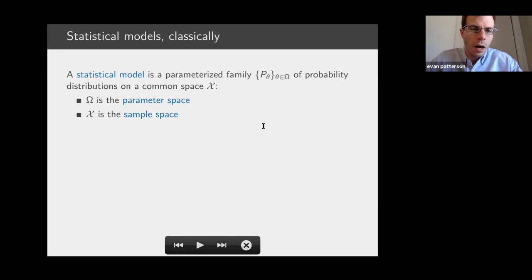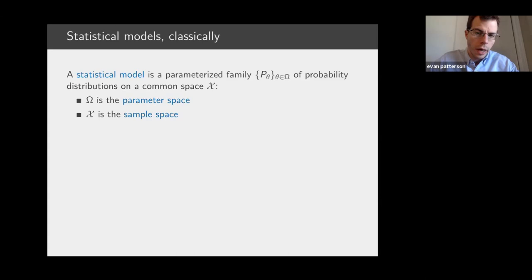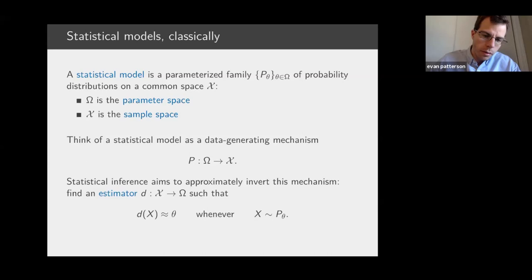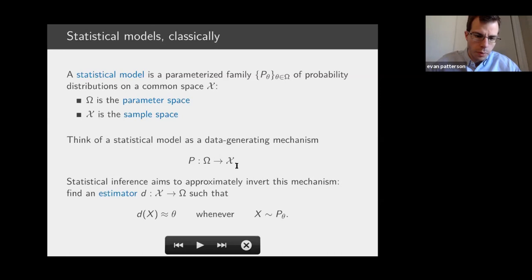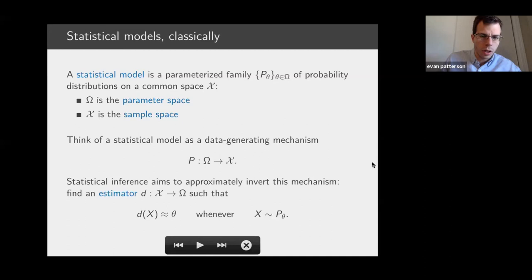In a classical sense, a statistical model is usually defined to be a parameterized family of probability distributions on a common space X, which is called the sample space. So for every point in your parameter space, you get a distribution on the sample space. We think of a model like this as being a data generating mechanism: there's some unknown parameter which defines a probability distribution that generates data, and the aim of statistical inference is to invert, at least approximately, this mechanism.